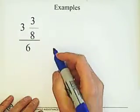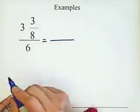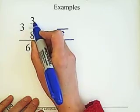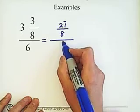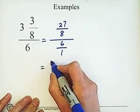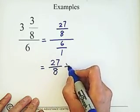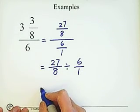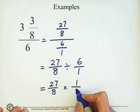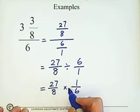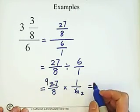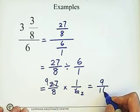Second example: first we need to simplify the numerator by changing the mixed number 3 and 3/8 into an improper fraction. 3 × 8 = 24, plus 3 = 27, so we get 27/8. The denominator 6 can be written as 6/1. Then we write the complex fraction in division form: 27/8 divided by 6/1. Following the rule of dividing fractions, change to multiplication and flip the second fraction. 27 and 6 share 3 as a common factor. Then multiply: 9 × 1 = 9, and 8 × 2 = 16. The answer is 9/16.